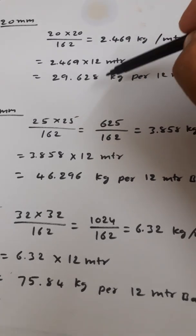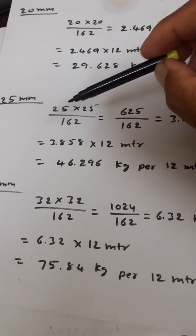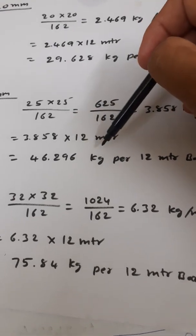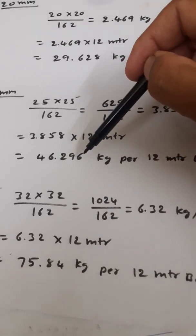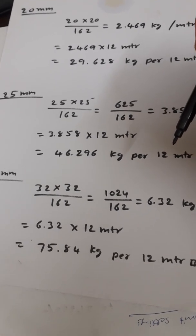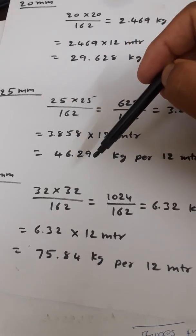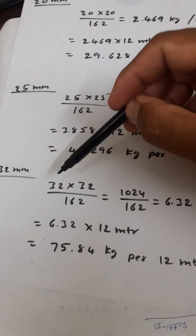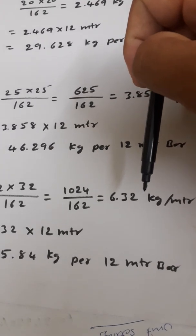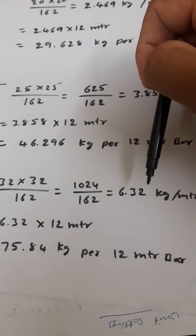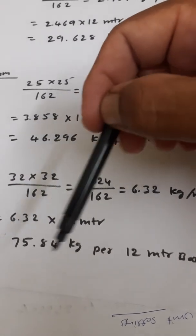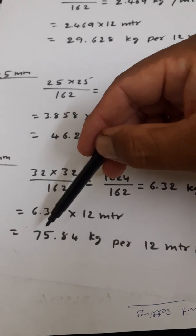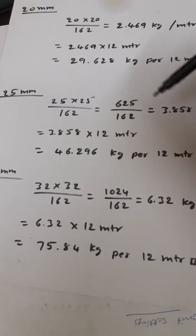A 25mm bar: 25 × 25 divided by 162 gives 3.858 kg per meter, and for a 12-meter bar that comes to 46.296 kg per full-length bar. A 32mm bar: 32 × 32 divided by 162 gives 6.32 kg per meter, so 6.32 × 12 meters gives about 75.84 kg per full-length 32mm bar.